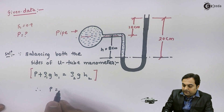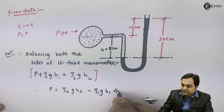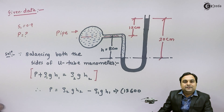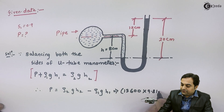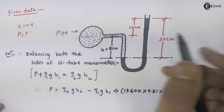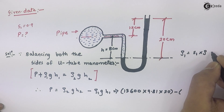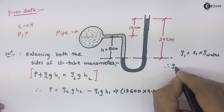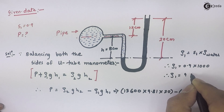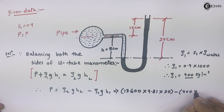To calculate pressure P, we rearrange: P = ρ₂gH₂ − ρ₁gH₁. Here ρ₂ is the density of mercury, which is 13600 kg/m³ — a value we must remember. G is 9.81, and H₂ is 20 centimeters. Since specific gravity S1 = 0.9 is given, the density ρ₁ = S1 × density of water = 0.9 × 1000 = 900 kg/m³.